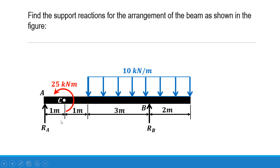The total span length will be 1 plus 1, that is 2, plus 3, that is 5, plus 2, that is 7 meters. The 10 kN per meter uniformly distributed load is acting over a length of 5 meters.